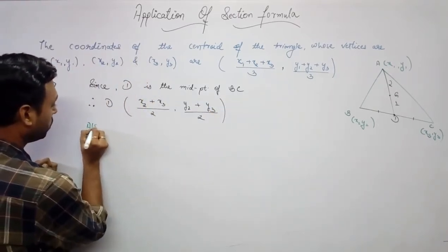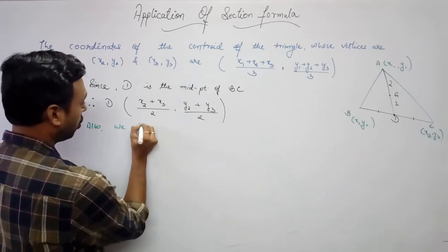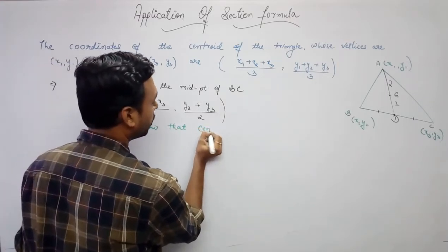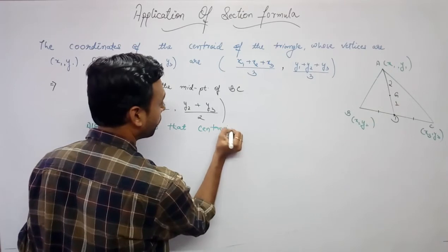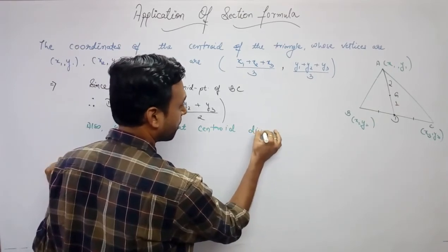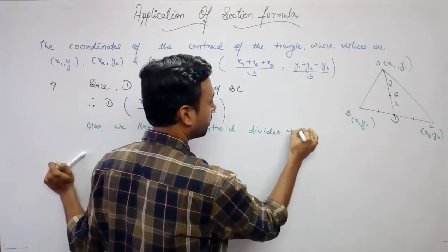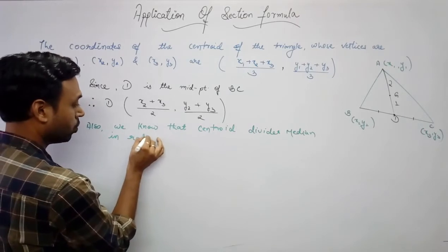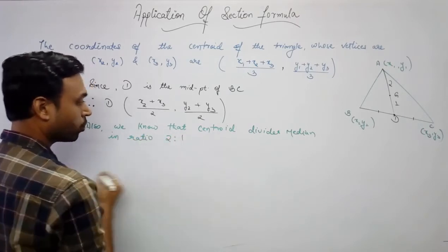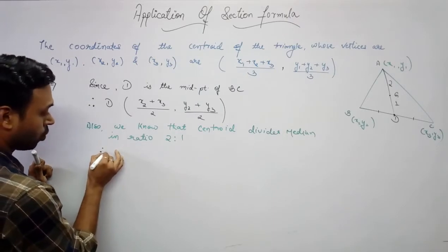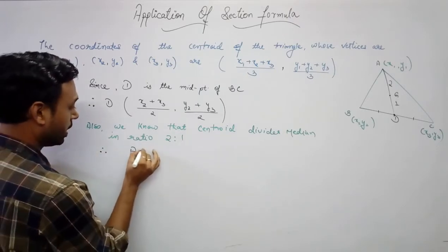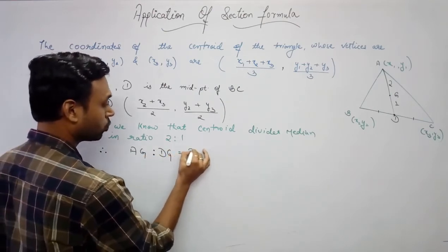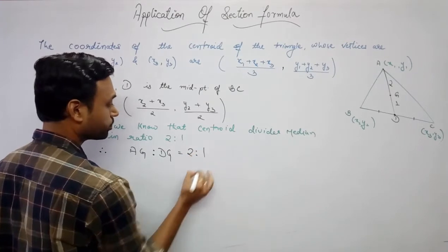Also, we know that the centroid divides the median in the ratio 2:1. Therefore AG:DG = 2:1. One important thing to note: the 2 comes on the side towards the vertex. So AG:GD = 2:1.